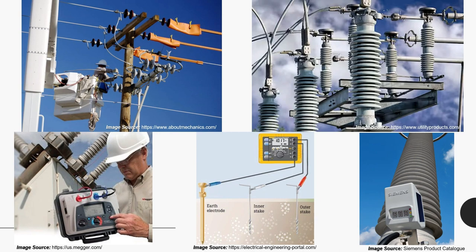Visual inspection is very much operator-skill dependent and requires expertise to find a problem in the product before installation. Resistance measurement is required to check the tightness of the high voltage or earth connections. Insulation resistance measurement is a non-destructive test to check insulation strength, but it cannot distinguish if the supplied product is an arrester or an insulator. Grounding check is critical for the proper protection of the arrester.